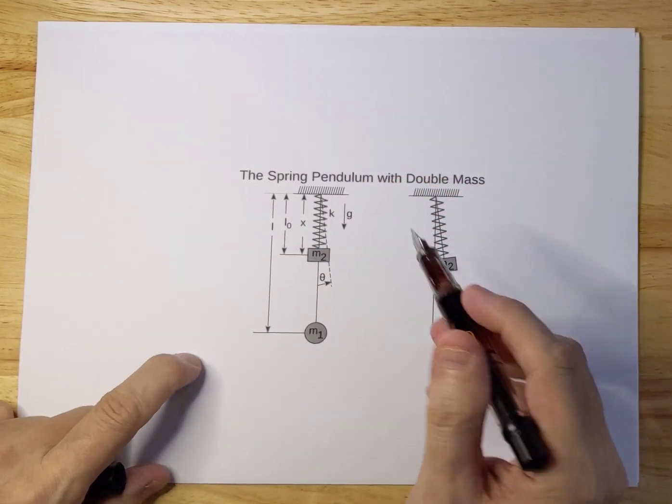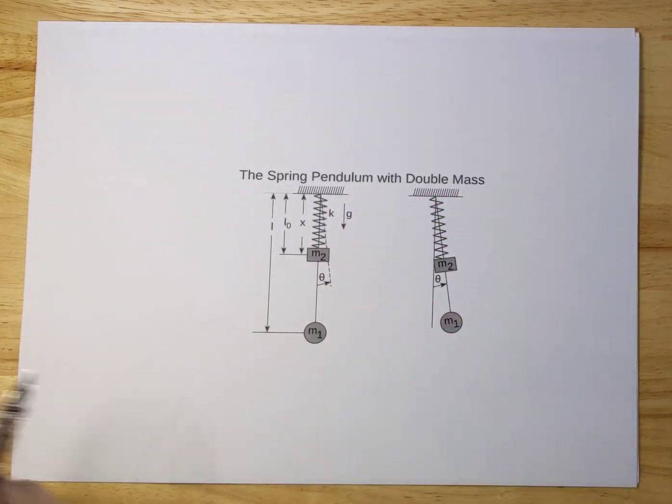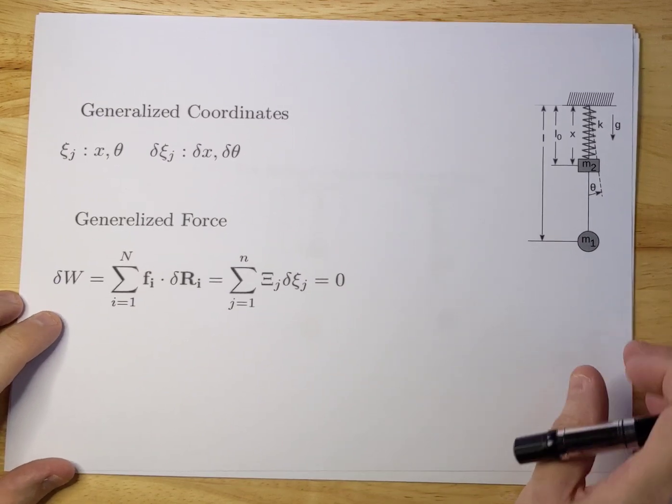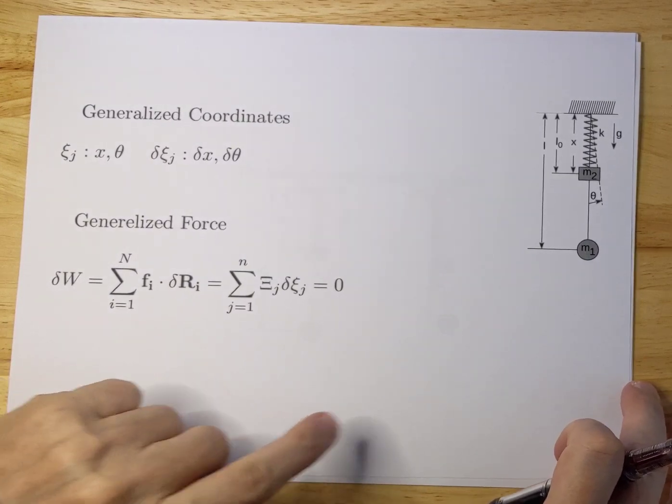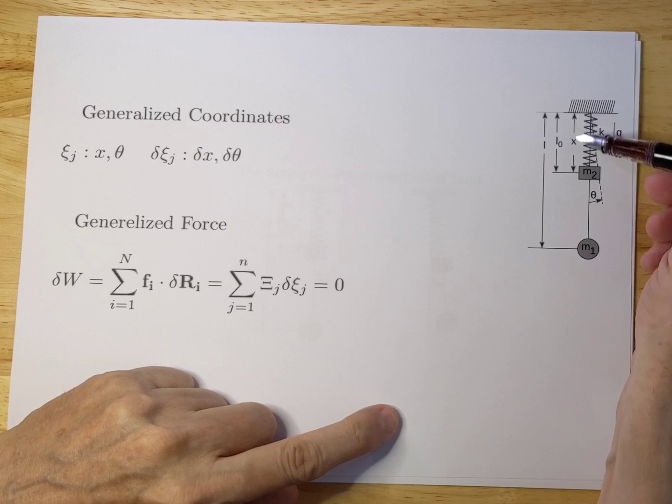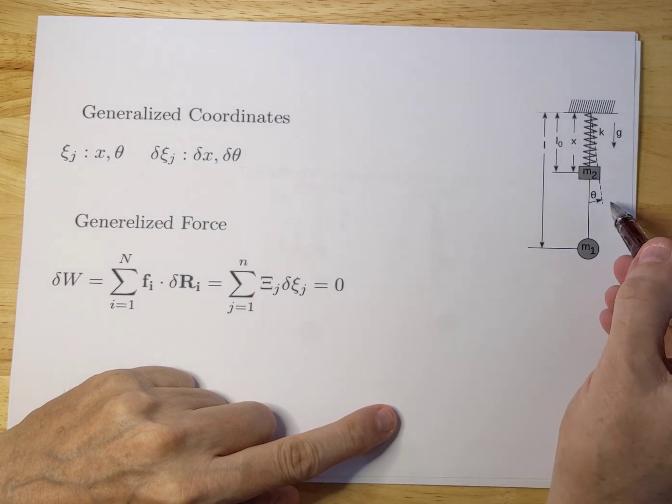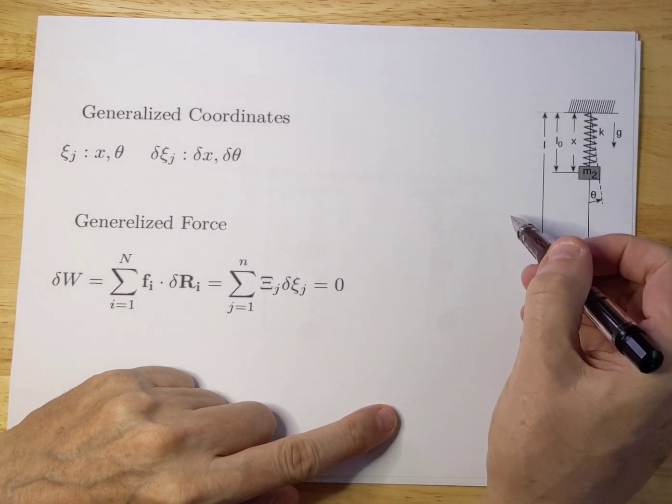I'm going to try to solve this system using Lagrangians and the first step we need to do is find out what the generalized coordinates are. There are two generalized coordinates: one is X which gives the movement of M2 up and down along the shaft of M1, and the second generalized coordinate is theta which lets it move in a plane from left to right.